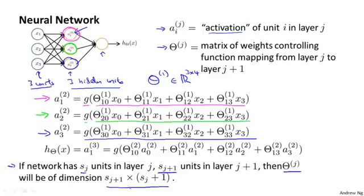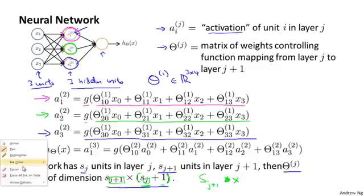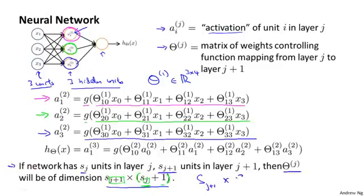Just to be clear about this notation, this is s subscript j plus one, and that's s subscript j, and then this whole thing plus one, this whole thing sj plus one. So that's s subscript j plus one by sj plus one, where this plus one is not part of the subscript.